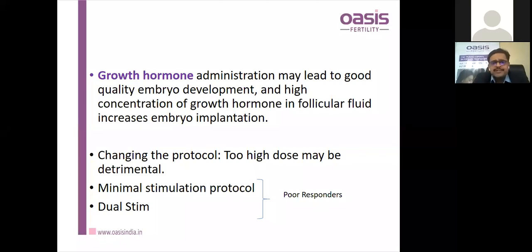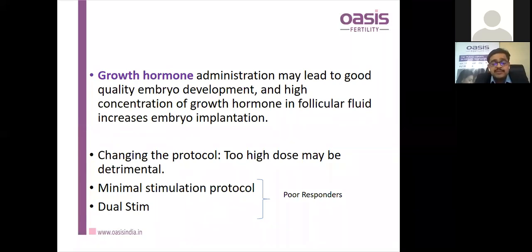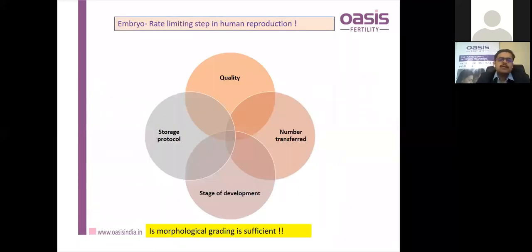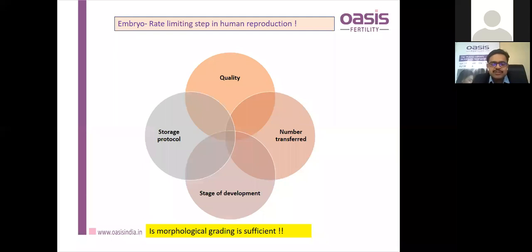In poor responders, minimal stimulation and dual stim protocol can work very well and can be used to get good oocyte yield when conventional antagonist or long agonist protocols fail. Embryo rate is a limiting step in human reproduction. Embryo quality, number transferred, stage of development, and storage protocol all affect IVF success. Very good lab practices and standardizing all these practices is very important.